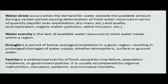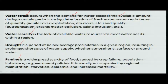The key terms are water stress, water scarcity, drought, and famine. These different terms are used to define conditions of water non-availability for plants and other activities. Water stress occurs when demand exceeds supply, causing trouble for fresh water resources in terms of quantity or quality. This water stress induces plant degeneration of leaves and affects growth patterns, creating some amount of deficiency.